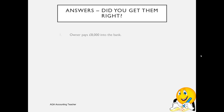Did you get them right? The owner pays £8,000 into the bank — the asset that is the bank account has increased, so we need to debit the bank with £8,000. It's increased because the owner has introduced capital of £8,000, so we need to credit the capital account.